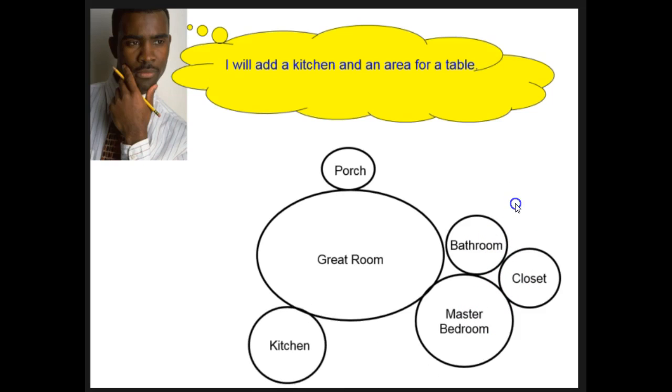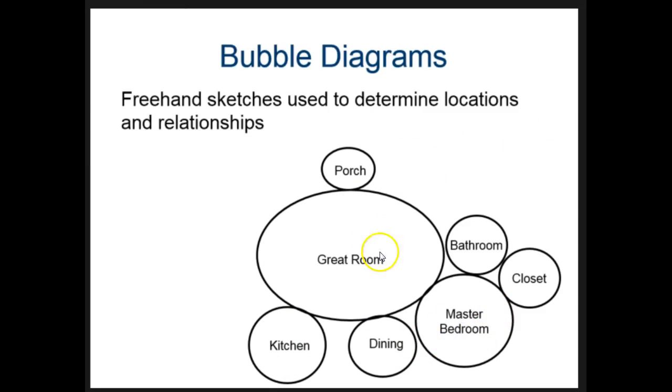And then he says he needs to add a kitchen and an area for a dining room. Notice he's only connecting to the great room, so that's what they're connecting off of. They don't connect to the master bedroom. This is called a bubble diagram. It shows us which rooms are connected to which, and it also shows us the relative size of the rooms.